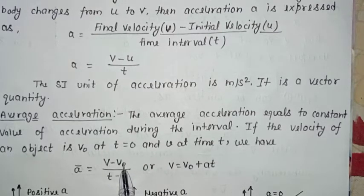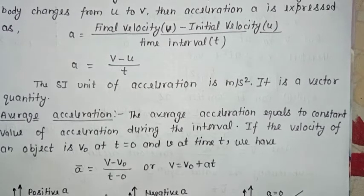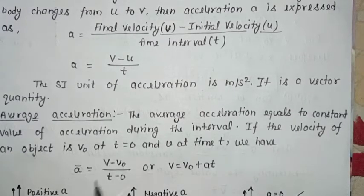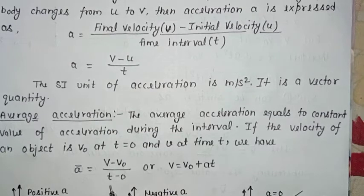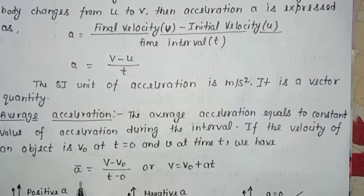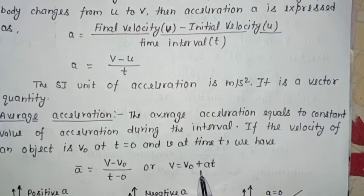So V is the final velocity, V₀ is the initial velocity, t is the final time, and 0 is the initial time. Average acceleration = change in velocity / change in time. From here, the equation is formed: Ā (average) = (V − V₀)/t, and since we consider total acceleration A, we get the first kinematic equation: V = V₀ + at.